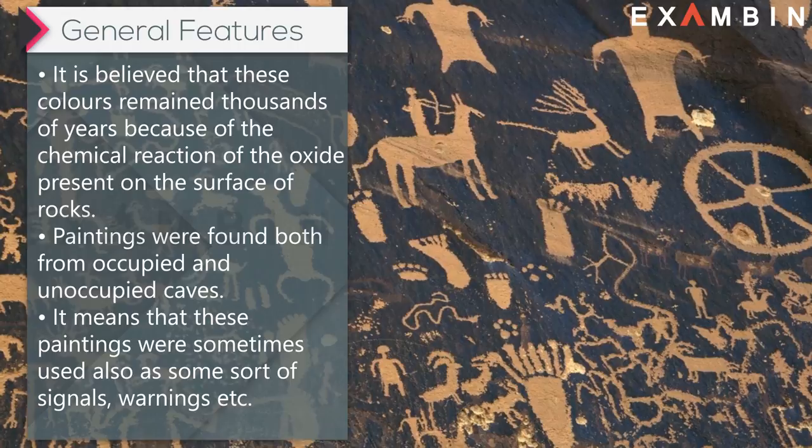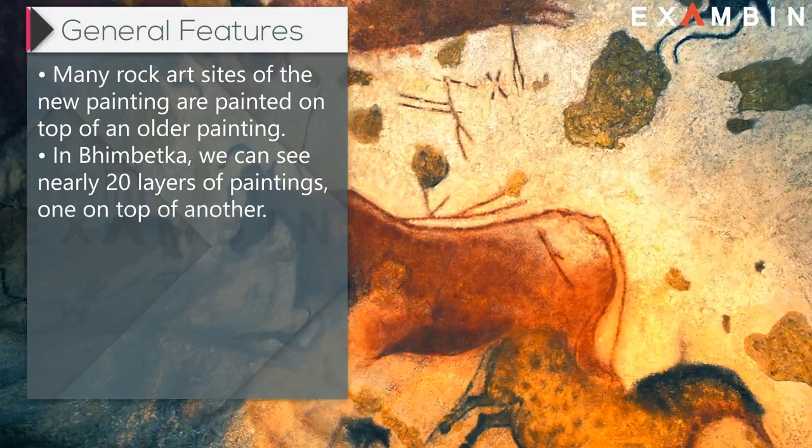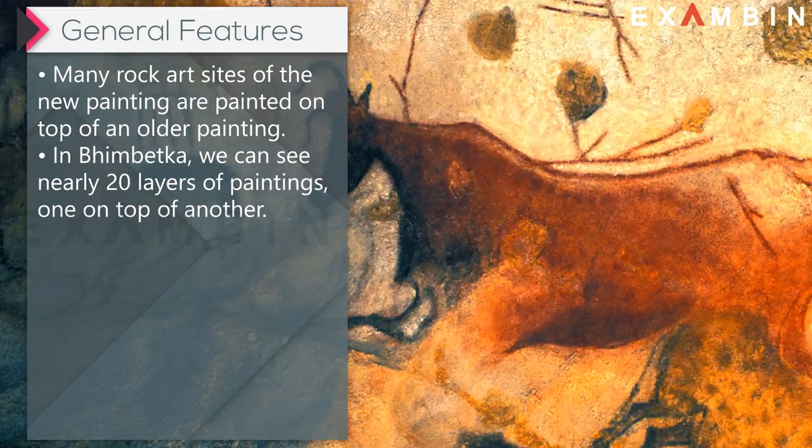Paintings were found both in occupied and unoccupied caves. This means that these paintings were sometimes used as some sort of signals, warnings, etc. Many rock art sites have new paintings painted on top of older ones. In Bhimbetka, we can see nearly 20 layers of paintings, one on top of another.